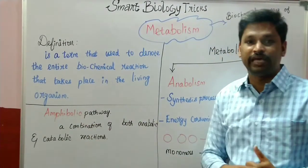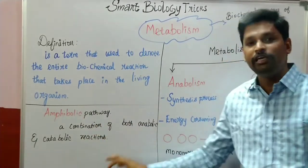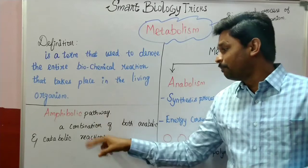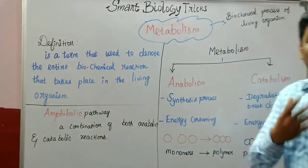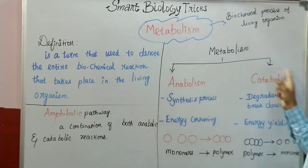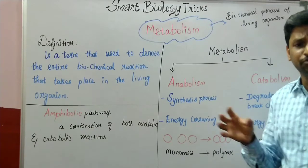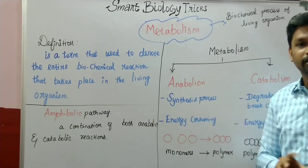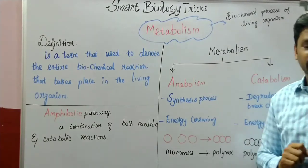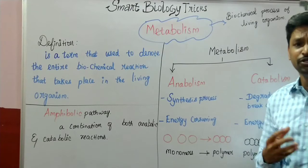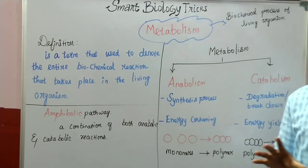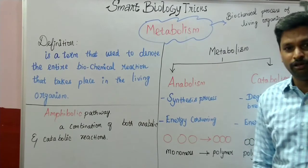Apart from these pathways, there is another pathway called the amphibolic pathway. The amphibolic pathway is a combination of both anabolic and catabolic reactions, and it takes place inside cells. Whether in prokaryotic or eukaryotic cells, anabolic and catabolic pathways are interconnected — this connection is referred to as intermediary metabolism. Intermediary metabolism means the connection between anabolism and catabolism. I hope you have understood the fundamental concept of metabolism. Thank you everyone.